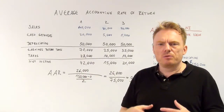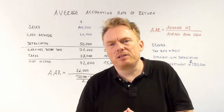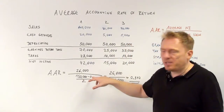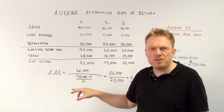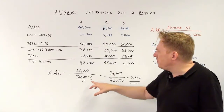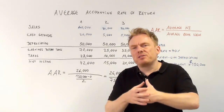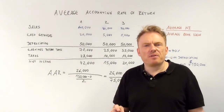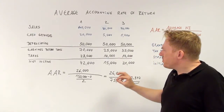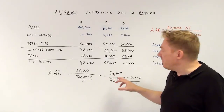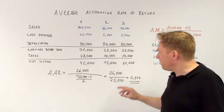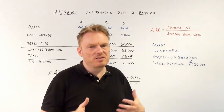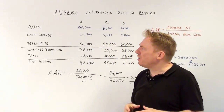Now we need to calculate the average book value. If there is no salvage value after the end of the third year, you have $150,000 — the initial investment — minus zero, divided by two, because you want the average book value. So the average book value equals $75,000. Average net income of $26,000 divided by the average book value of $75,000 equals 0.347. That's the average accounting rate of return.